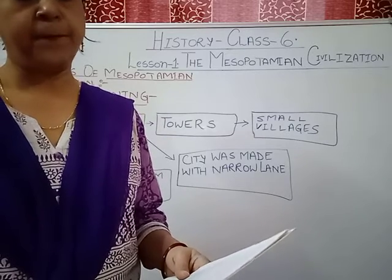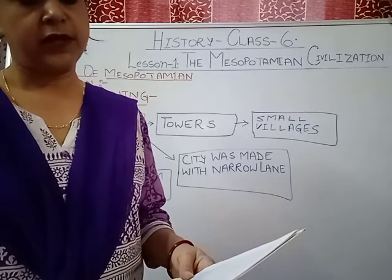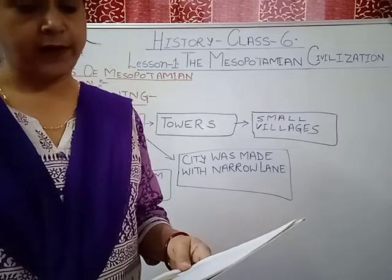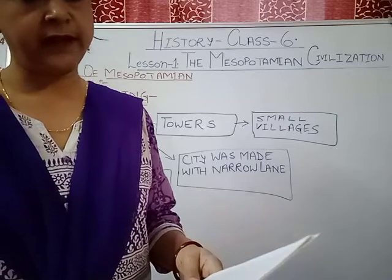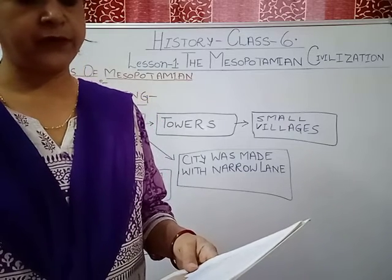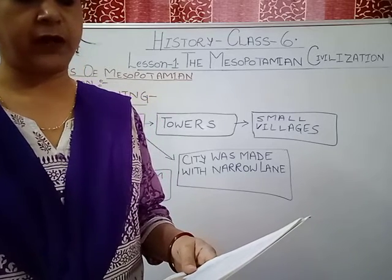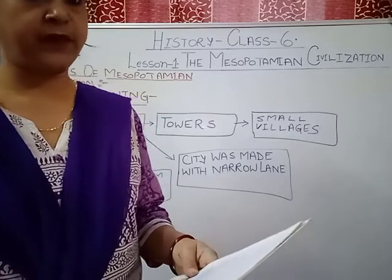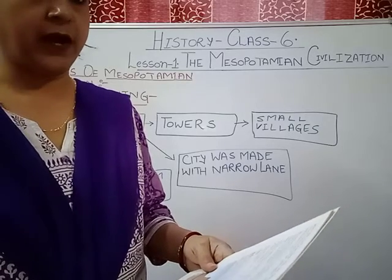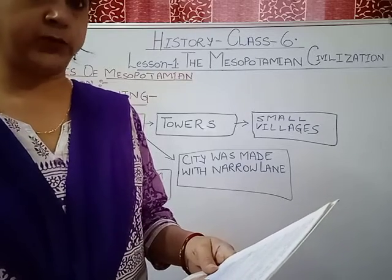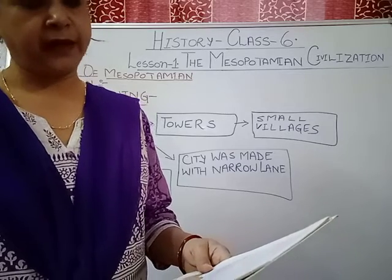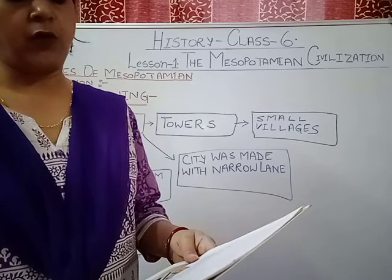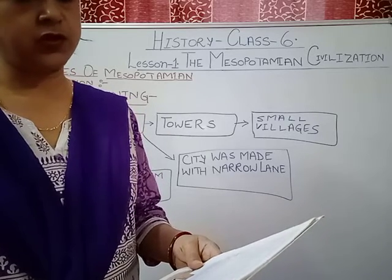They had a system of dikes to stop water from flooding their fields. Other occupations included jewellery making, carpentry, shoe making, and weaving. As agriculture developed, many other areas came up and they knew the art of making jewellery, shoes, carpentry, and weaving. Animals such as ox, cow, sheep, and donkeys were also domesticated.